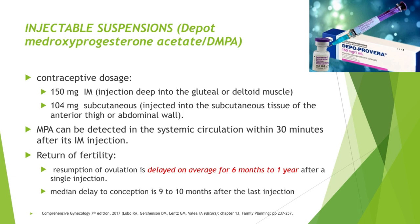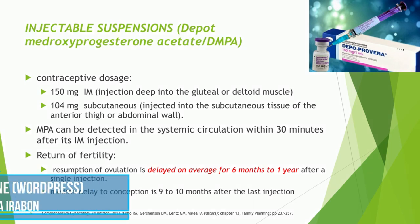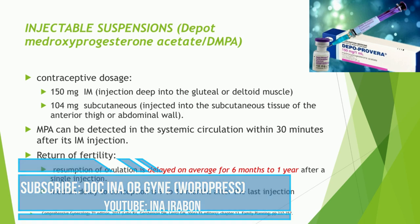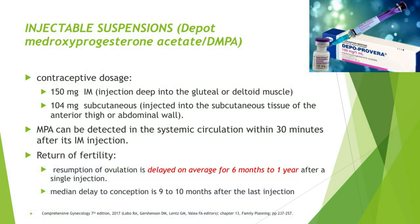DMPA dosages: 150 mg IM, injected deep into the gluteal or deltoid muscle, or 104 mg subcutaneous injection into the subcutaneous tissue of the anterior thigh or abdominal wall. MPA can be detected in the systemic circulation within 30 minutes after IM injection. Regarding return to fertility, resumption of ovulation is delayed for an average of 6 months to 1 year after a single injection, and the median delay to conception is about 9 to 10 months after the last injection.